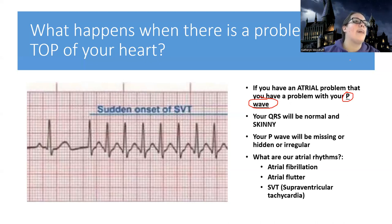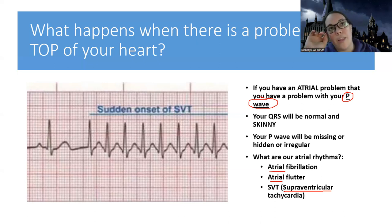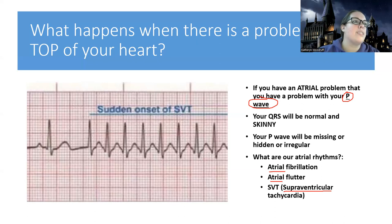We're going to look at atrial rhythms, and all of these are usually going to have 'atrial' in their name, except for SVT — supraventricular tachycardia — which means 'above the ventricle.' The way you're going to spot these rhythms is that your QRS is going to be skinny, like it's supposed to be, because there's no problem at the bottom of the heart.